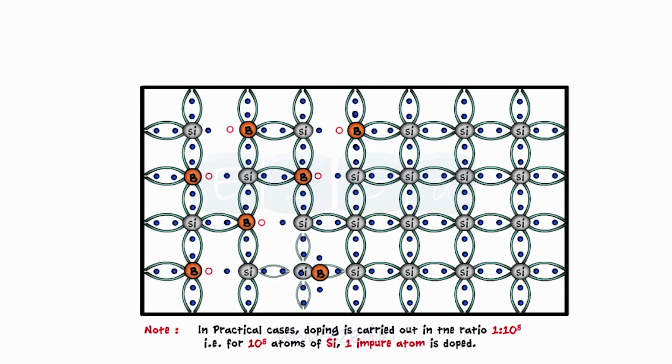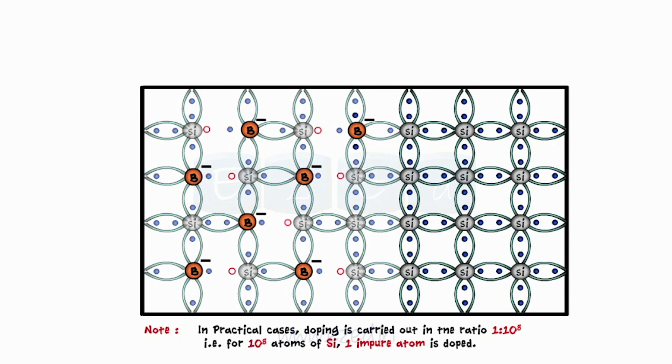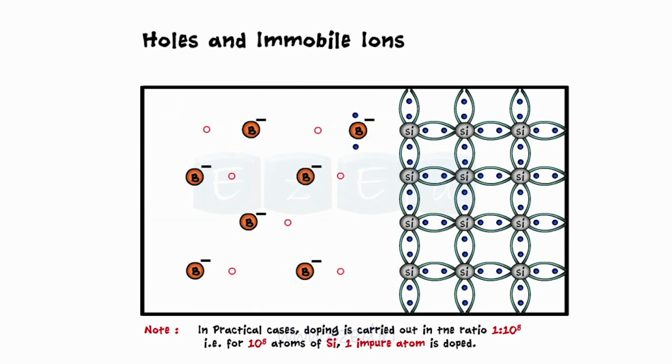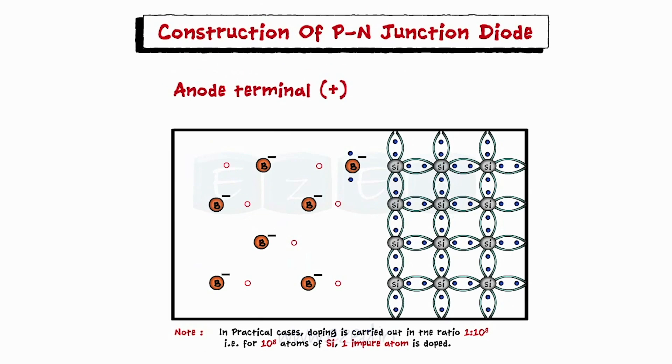These ions are immobile in nature. Thus we have holes and negative ions which are formed in the left half which forms the anode and acts as a positive terminal.